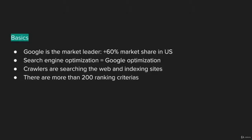Market leader among search engines is Google — I guess you know that fact. Google has a market share of more than 60% in the US. In countries like Germany, they're even more dominant, with a market share of 90%. So they're really a monopolist. When you're doing search engine optimization, therefore, you're first and foremost optimizing for Google.